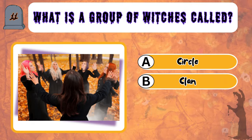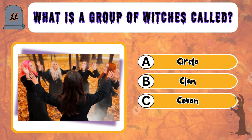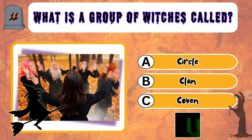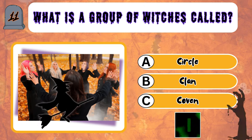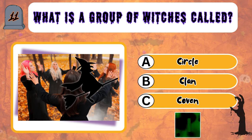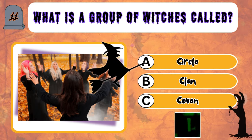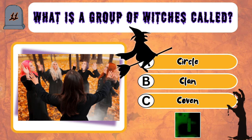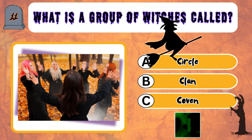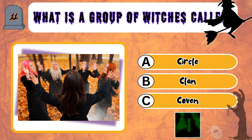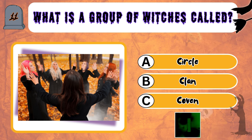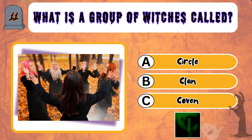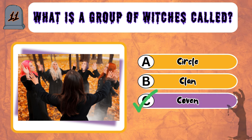Question 11: What is a group of witches called? Letter A, Circle. B, Clam. C, Coven. The answer is letter C, Coven.